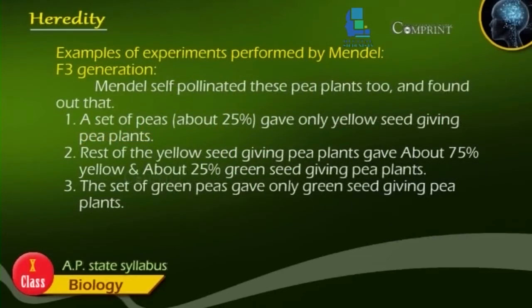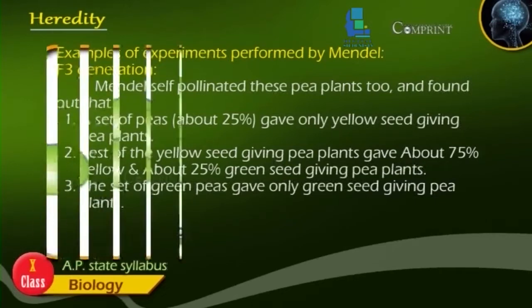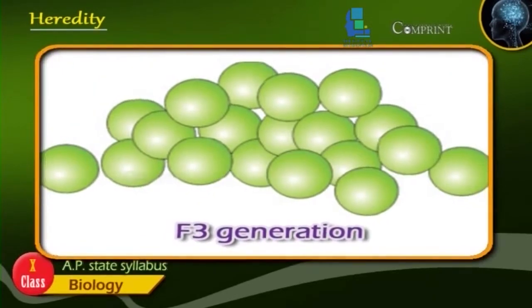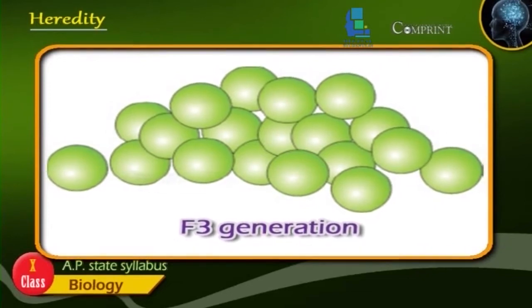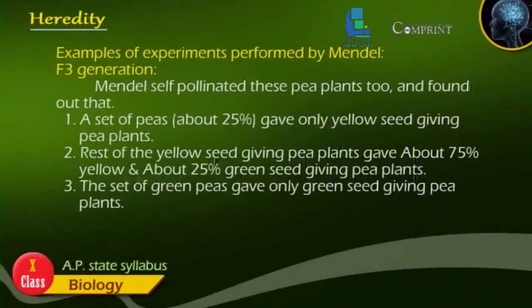F3 generation. Mendel self-pollinated these pea plants too and found that: 1. A set of peas — about 25% — gave only yellow seed-giving pea plants. 2. The rest of the yellow seed-giving pea plants gave about 75% yellow and about 25% green seed-giving pea plants. 3. The set of green peas gave only green seed-giving pea plants.